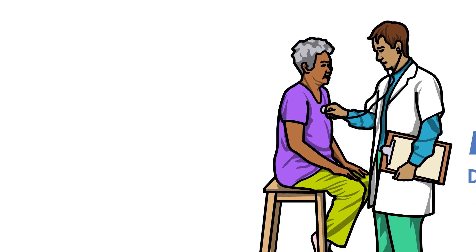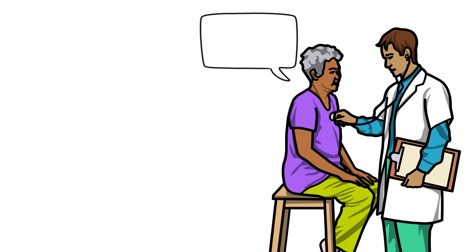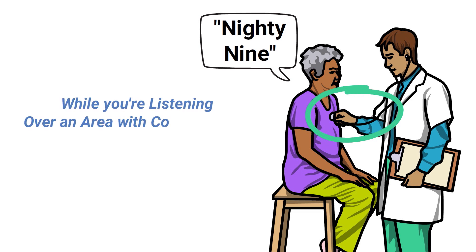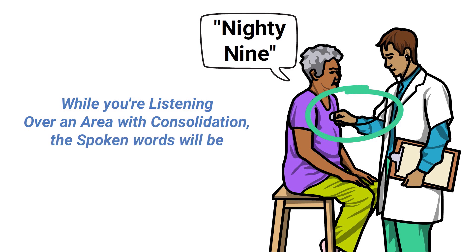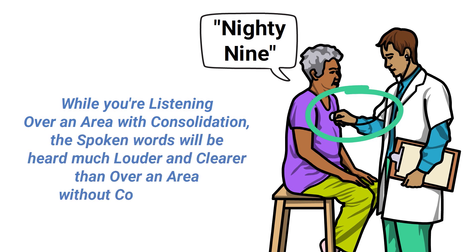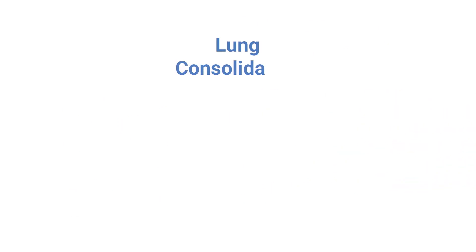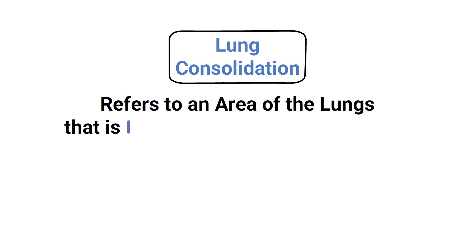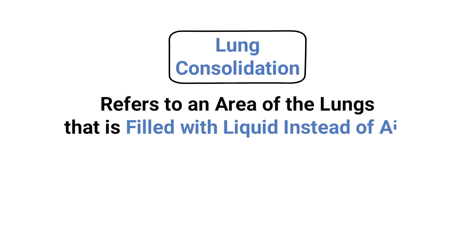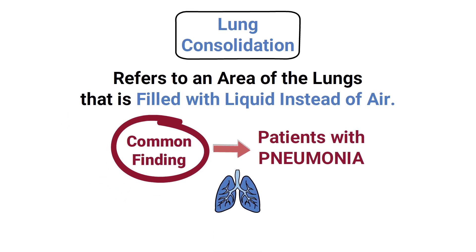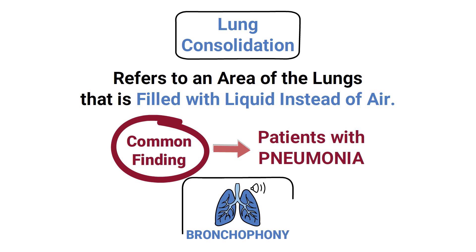To perform this type of assessment, instruct the patient to repeat the word '99' as you auscultate their chest, comparing both sides of the lungs. While listening over an area of consolidation, the spoken words will be heard much louder and clearer than over an area without consolidation. Lung consolidation refers to an area of the lungs filled with liquid instead of air — a common finding in patients with pneumonia, which means bronchophony is a sign of this disease as well.